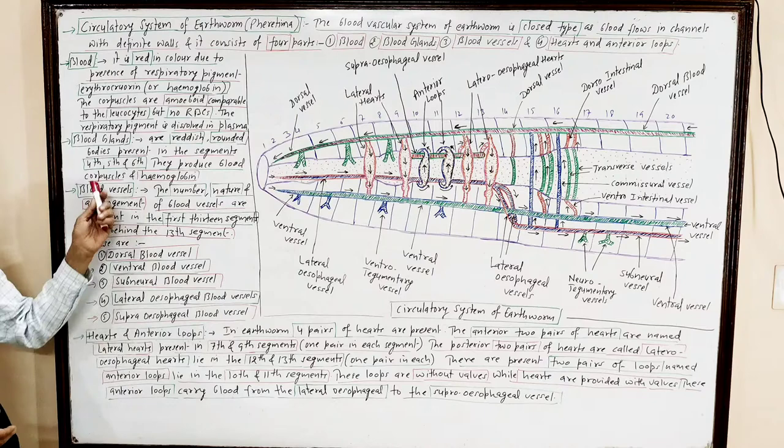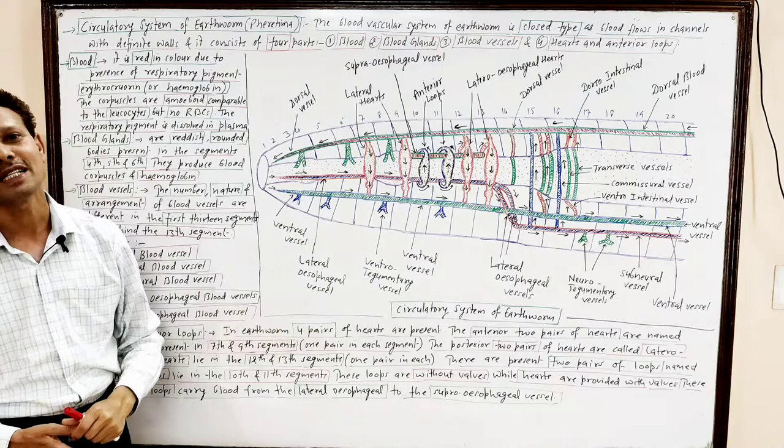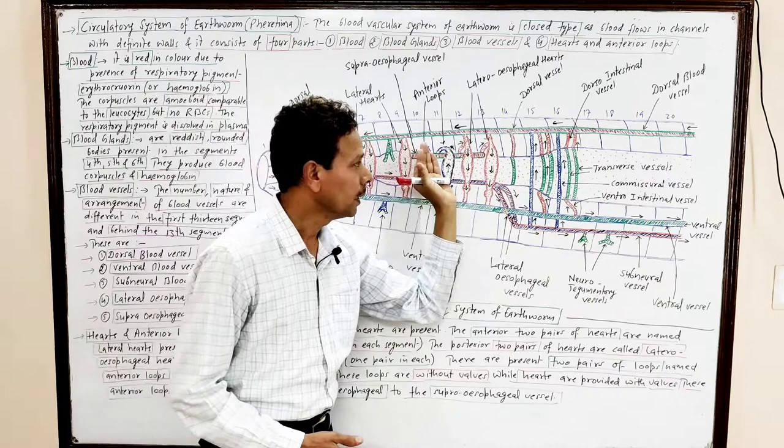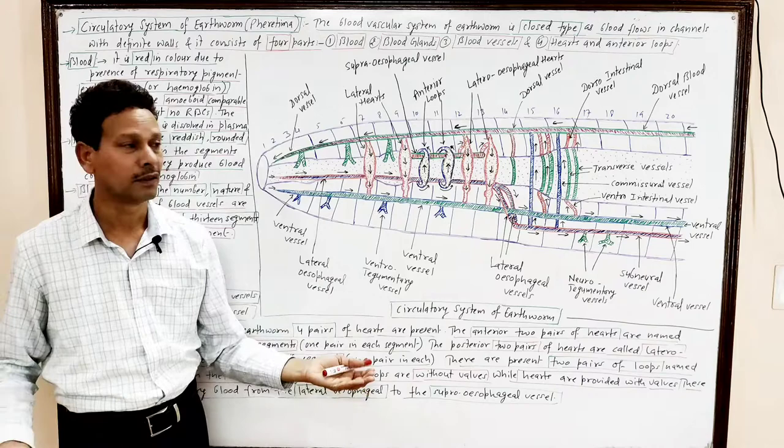The third component is blood vessels. In the case of earthworm, the circulatory system is of closed type. The arrangement, number, and nature of blood vessels is different in the first 13 segments of the body compared to the rest of the body.